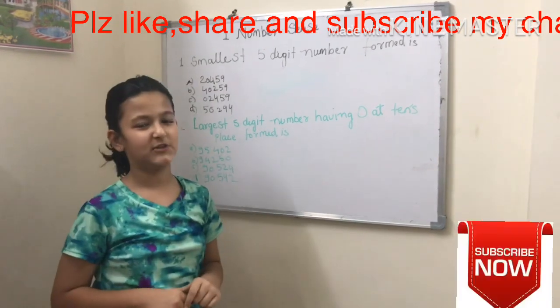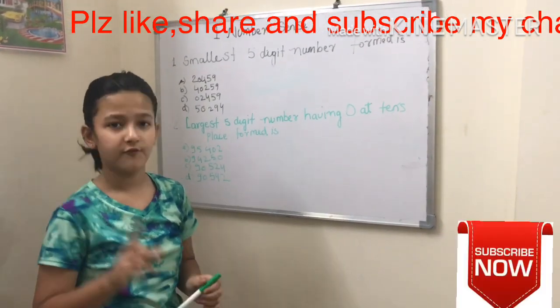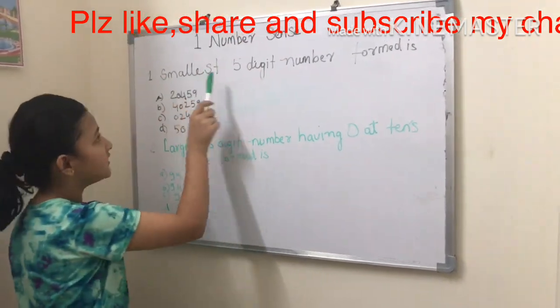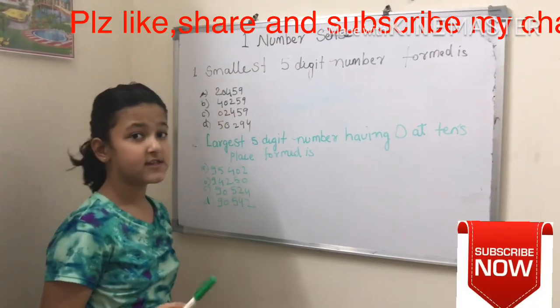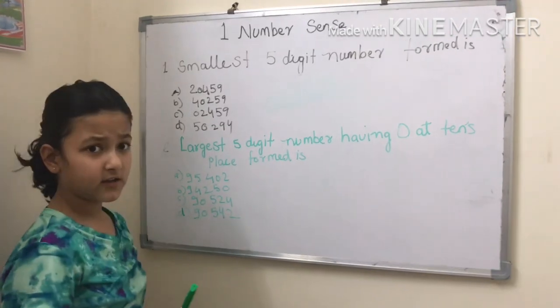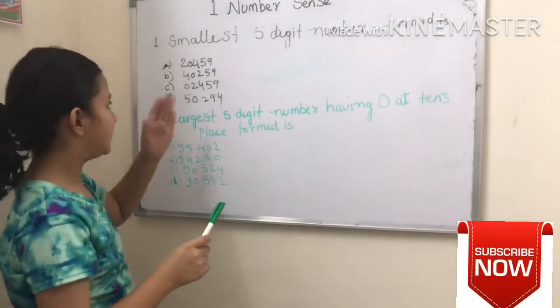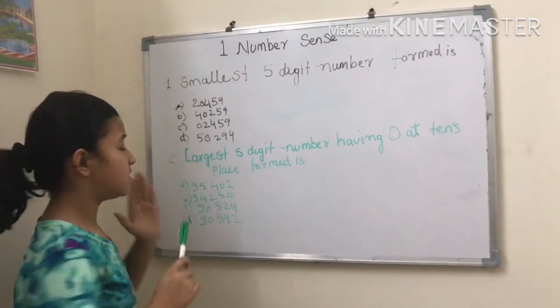Hi guys, welcome back to my channel. Nice to meet you. I'm going to teach you IMO first chapter, number sense. The smallest five-digit number formed is... lots of kids get confused in this. So why do they get confused? They use zero, two, four, five, nine - it could be any number - but it has zero. Kids think...